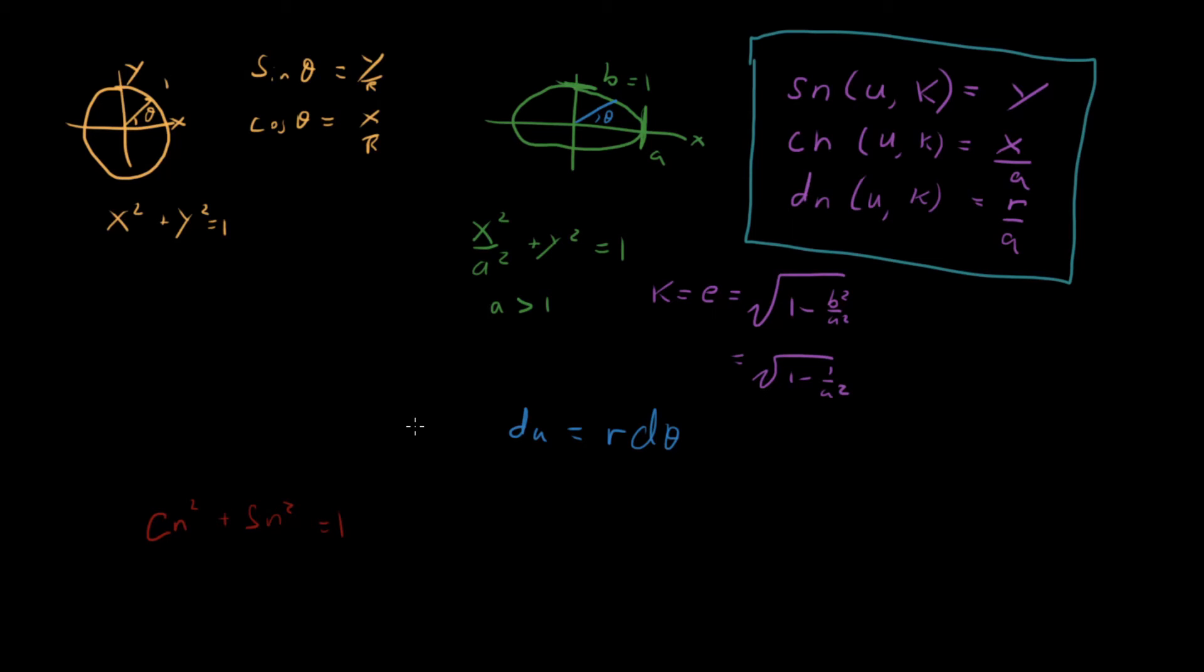There's another one that we can write. We can say that this radius here, well, radius squared is equal to x squared plus y squared. So what does that mean? That means that if we have a squared dn squared, that's r squared, then that's going to be equal to a squared cn squared plus sn squared.